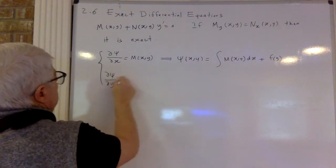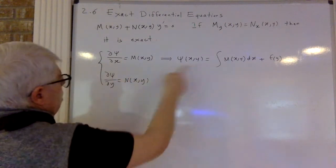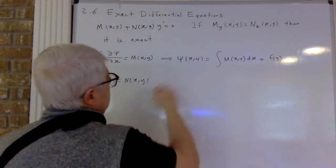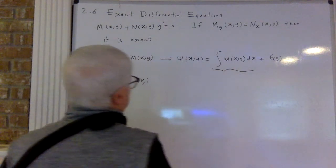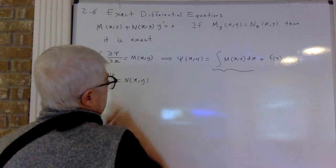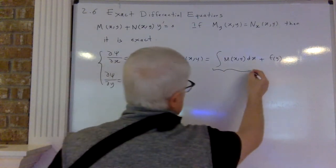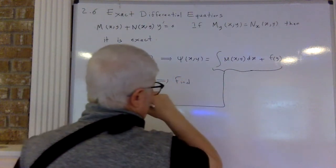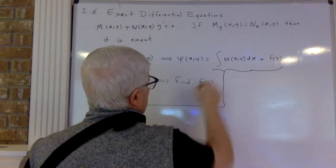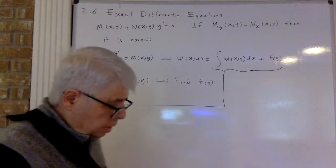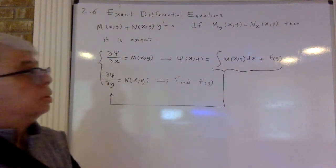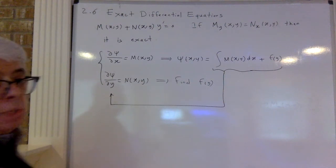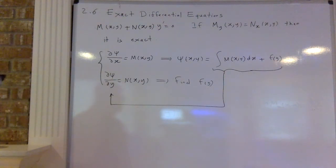The second equation is dc/dy = N(x,y). So you substitute your expression for c here and find f(y). Sometimes you start with M(x,y) and sometimes N(x,y), depending on which one is easier to integrate — one with respect to x, the other with respect to y. Depending on the situation, sometimes you should start with N; it's easier.